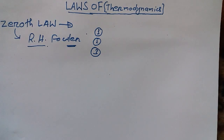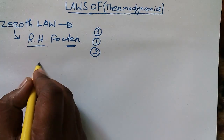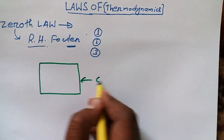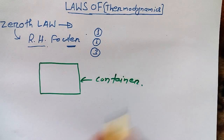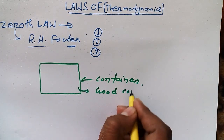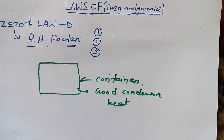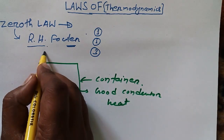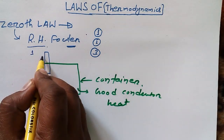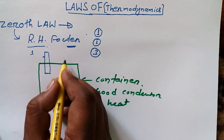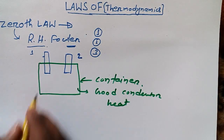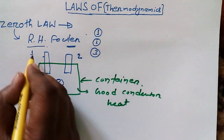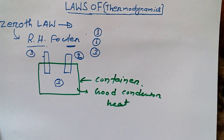To help you understand this law better, I will draw a diagram. Suppose this is a container, and this container is a good conductor of heat — because in thermodynamics we study heat, we must have a good conductor. Here we have two rods: Rod One, which is also a good conductor of heat, and Rod Two.